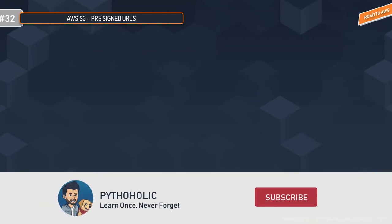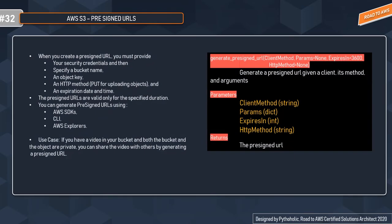A pre-signed URL gives you access to the object identified in the URL, provided that the creator of the pre-signed URL has permission to access the bucket. In simple terms, pre-signed URLs are useful if you want your users or customers to be able to upload a specific object to your bucket but you don't require them to have AWS security credentials or permissions.